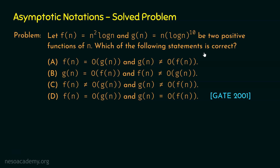We need to check whether one function is asymptotically bigger than the other, i.e., whether one function is big O of the other. Big O notation is what we are going to focus on. Here f(n) = n² log n and g(n) = n × (log n)^10. We need to compare these two functions and check which is big O of the other.